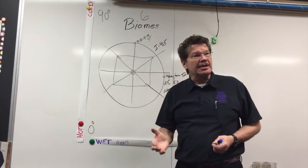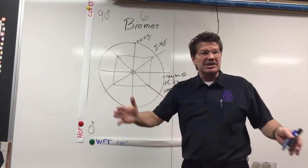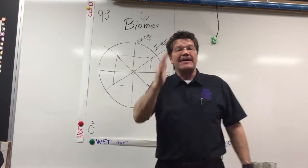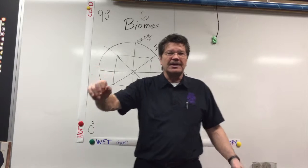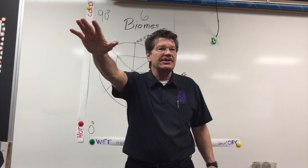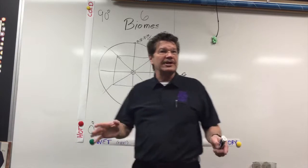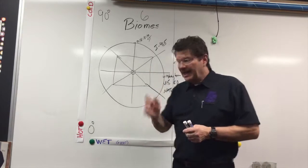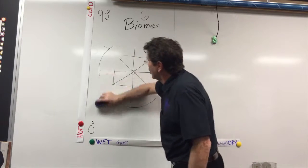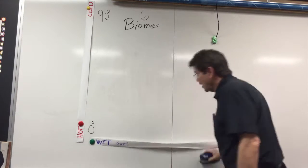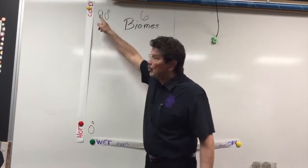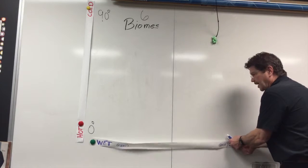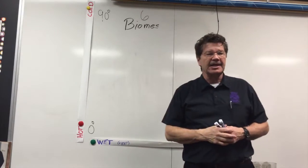I'm going to visit Greenwich, England, where the prime meridian goes right through London. I'm going to stand with one foot in the eastern hemisphere and one in the western hemisphere. I've been to the equator but it would be really nice to stand one foot east and one foot west there too. This helps us with our biomes, because when you look at the world, there are some places that are really hot, some really cold as we go from the equator up, and some that are really wet and some that are really dry.